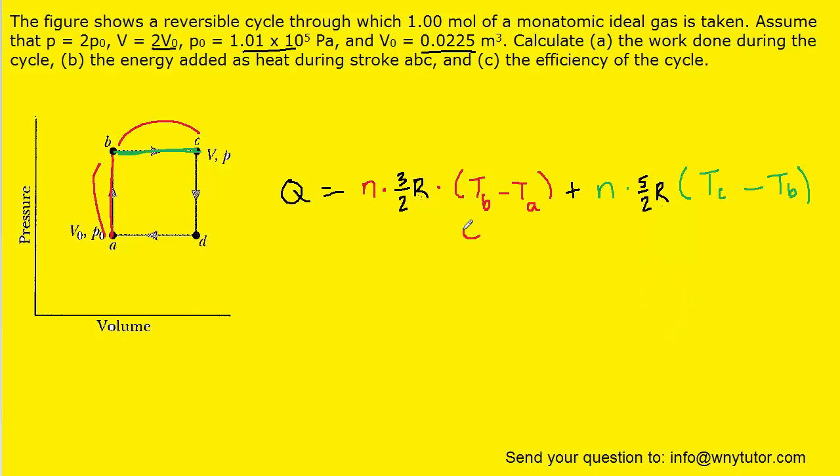Now what we're going to do is actually take this term, Tb minus Ta, and factor out a Ta from that term. If we factored out Ta, then we would be left with Tb over Ta minus 1. One way of thinking about that is if you were to redistribute the Ta into the parentheses, you would end up with Tb minus Ta.